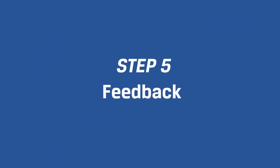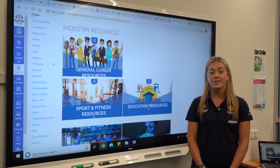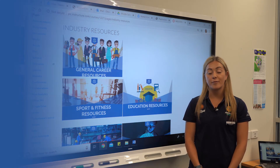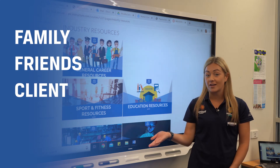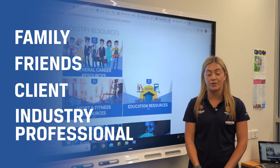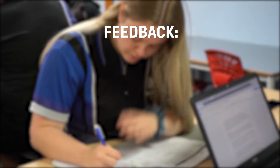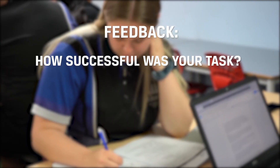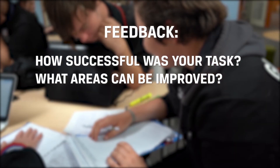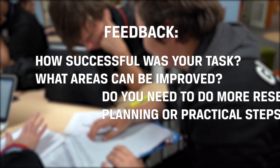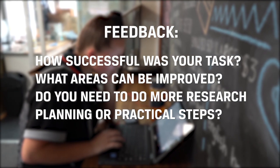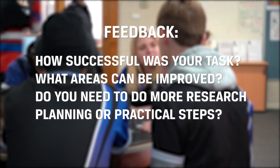Step five is feedback. During this step, you're required to get some feedback from family, friends, a client you used for the task, or even a professional in your industry. This feedback will give you an idea of how well you performed the task and areas you can improve. Seeking this feedback will help you to do your final two steps, which are your reflection and self-evaluation.